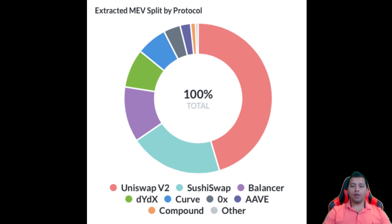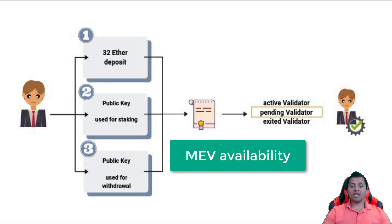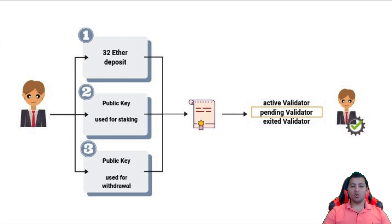Getting back to the original topic: does MEV exist on Ethereum 2.0, whereby there are no miners? Since the transaction ordering process in ETH 2 is the same as that of Proof of Work Ethereum (ETH 1), it is reasonable to think that MEV opportunities will still exist as we know them today. The expected profit for a validator is determined by two factors: MEV availability — does the network expose significant MEV at the time the validator is a proposer? — and MEV expertise itself — does the validator have the expertise to extract the MEV?